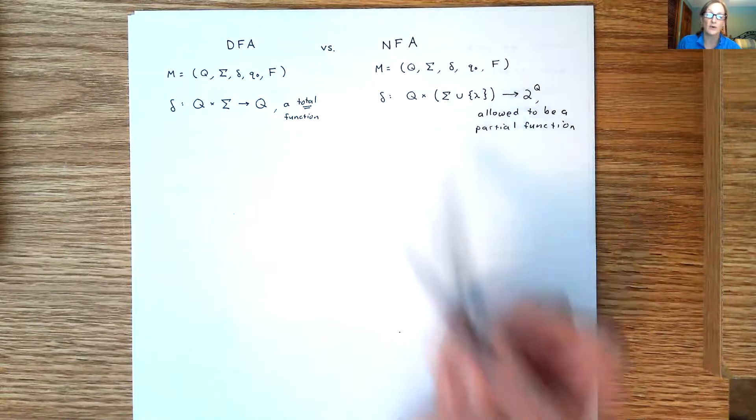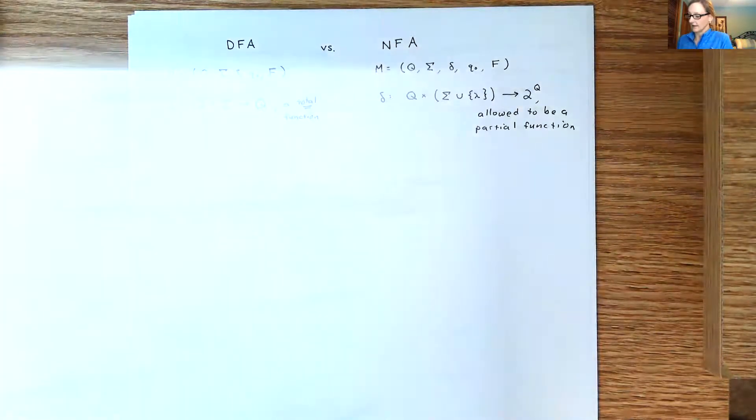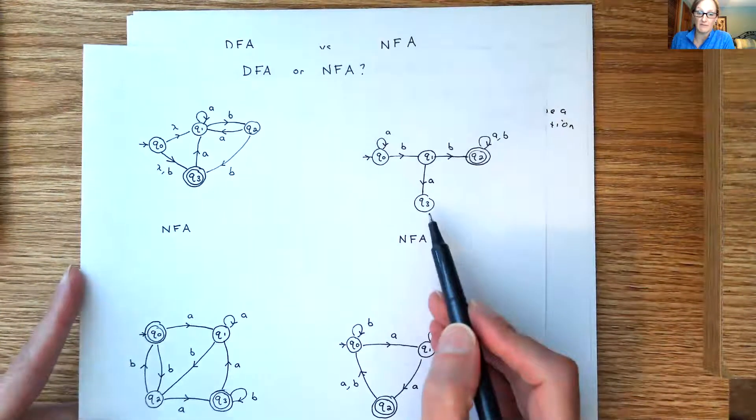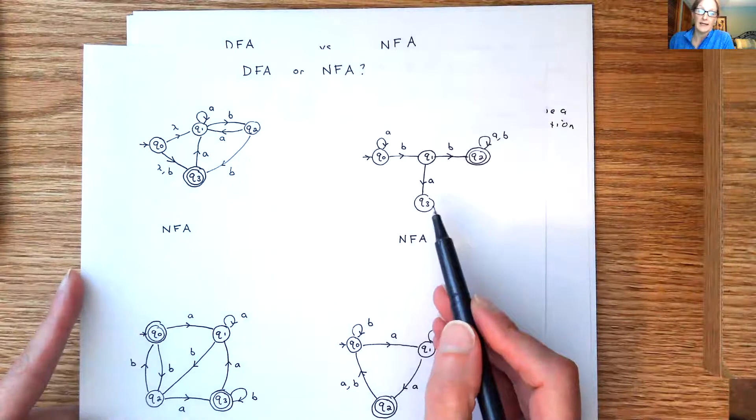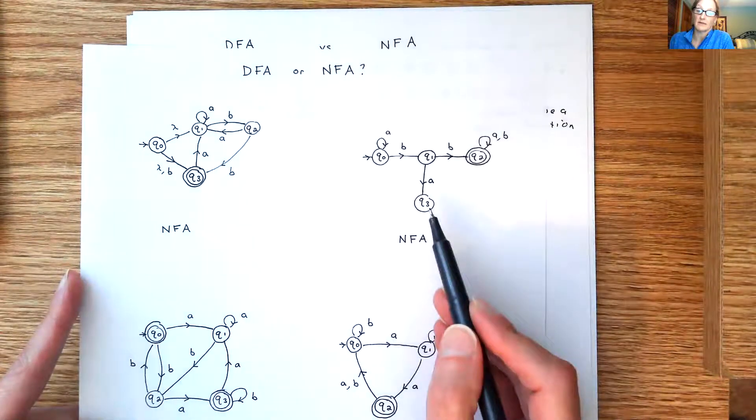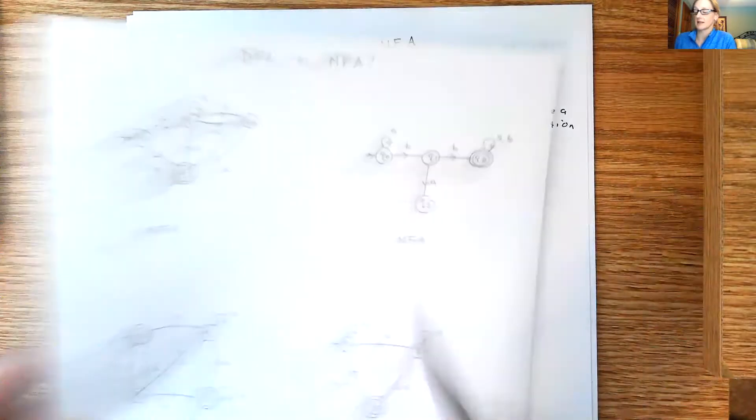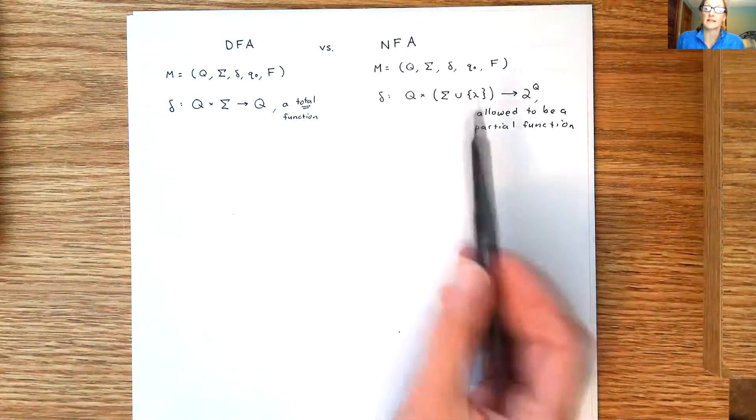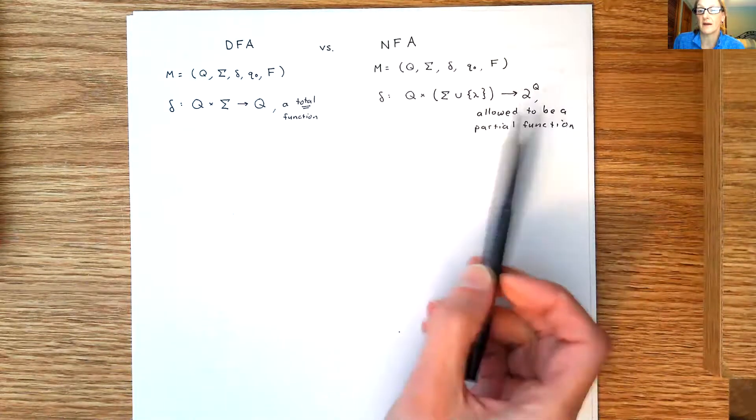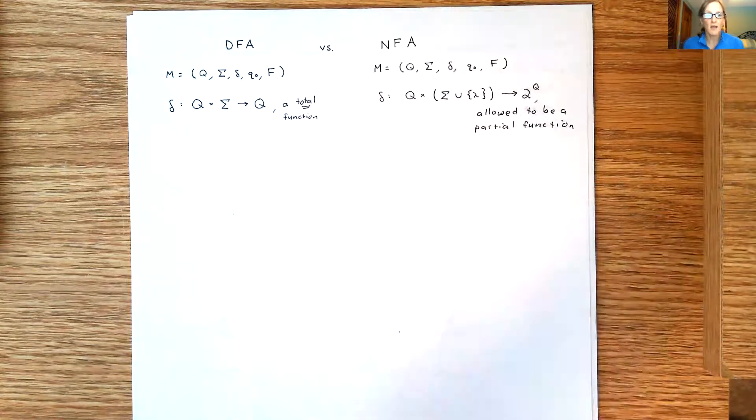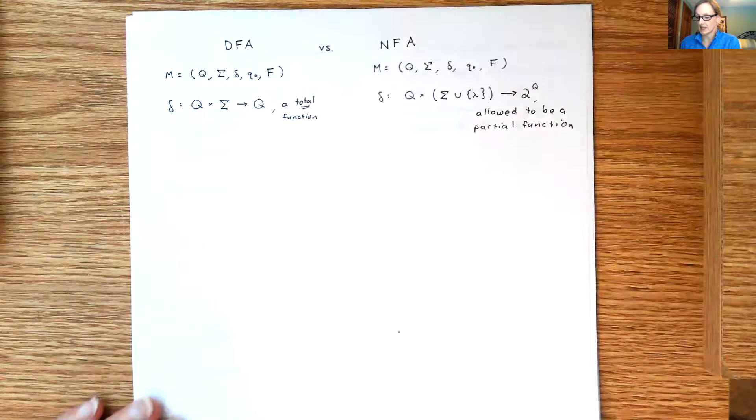So in a sense it's kind of a total function, but we'll just say it's allowed to be a partial function to allow for those situations like we had in Q3. So Q3 from the second example on an A had nowhere, it was mapped to the empty set. So you could think of it as some of the elements aren't mapped anywhere or you could think of it as being mapped to the empty set.